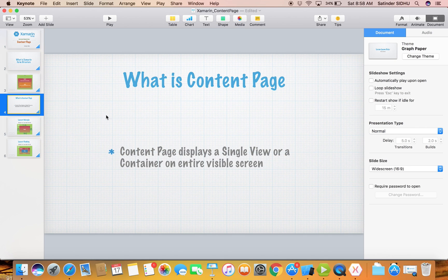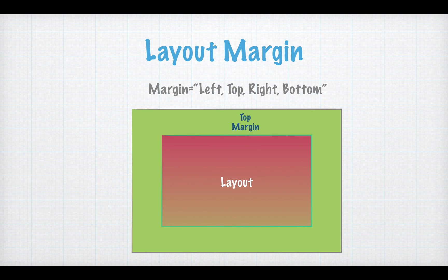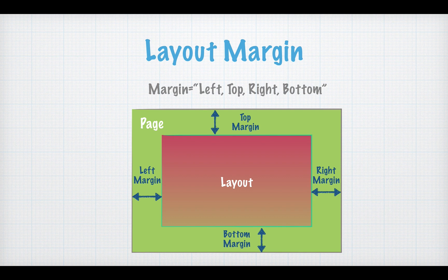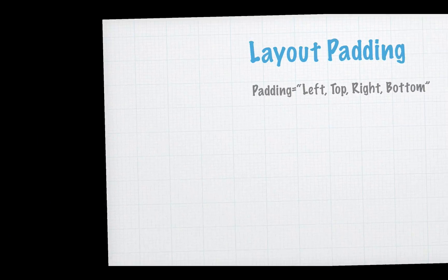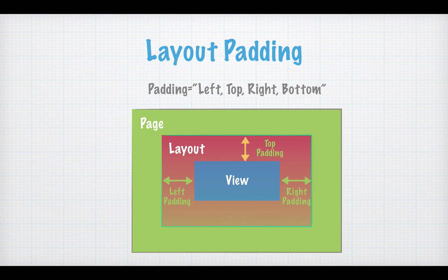Now let's look at some basic but interesting properties to beautify our project. First, layout margins - right now the layout is merged into the entire section. We can add a margin property. The format starts from left, then top, right, and bottom. Another property is padding - that is how much space you want to keep inside the layout for those views. You see layout, then view, and the space inside is the padding.